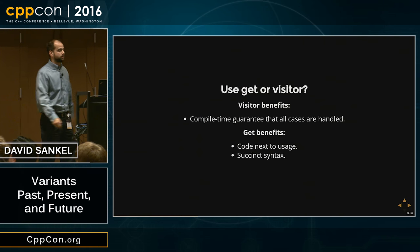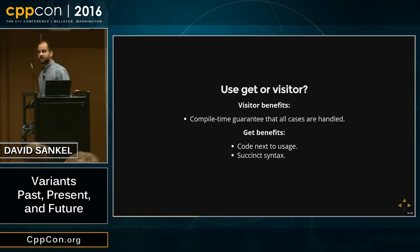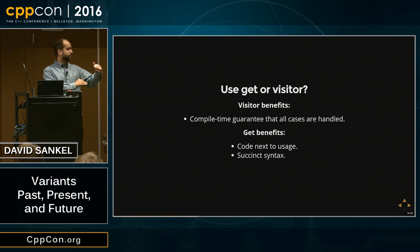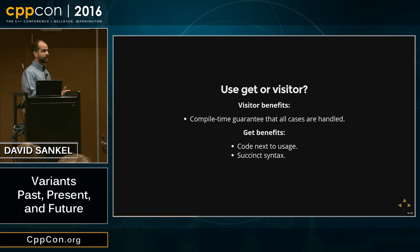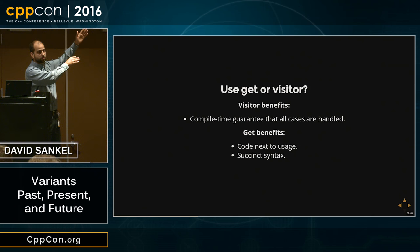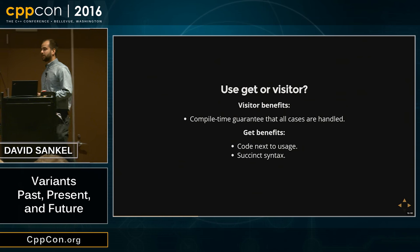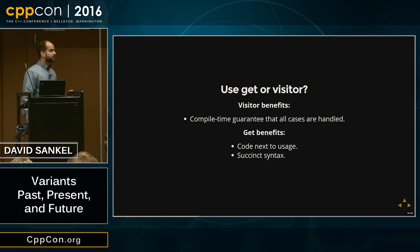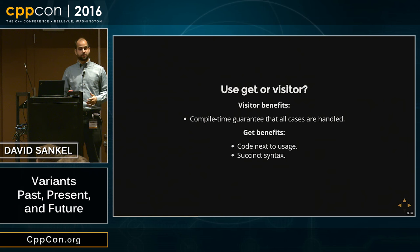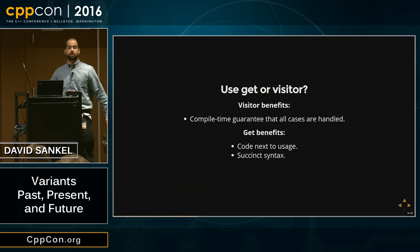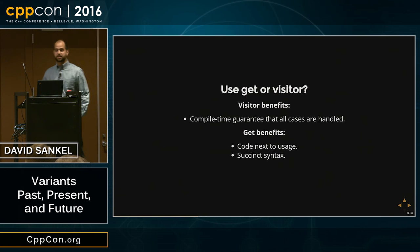Should you use get or visitor? The benefit of visitor is you get a compile-time guarantee that all cases are handled. If you miss one and don't have an overload for something, you'll get a compile error. The benefit of get is the code is right next to the usage — you don't have to make a separate struct somewhere else, and you get a succinct syntax. My recommendation is to always use the visitor, because if you add another alternative to your variant, you'll get a compile error in every place that wasn't handled properly. If you use get, you get runtime errors.